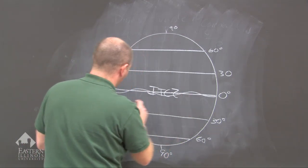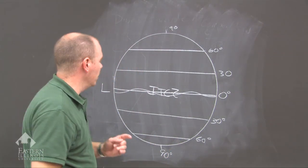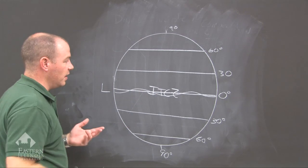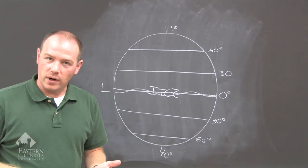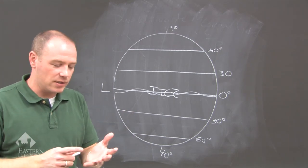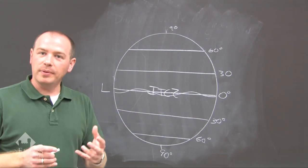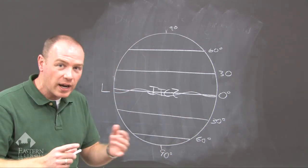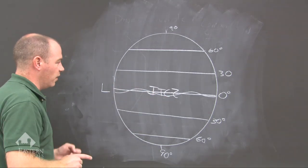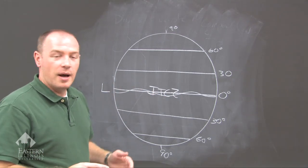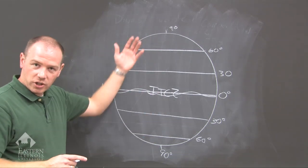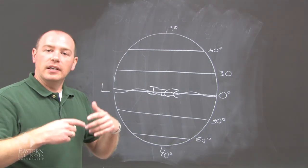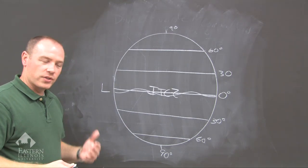The ITCZ is a low pressure zone, so you've got warm air rising. It influences the distribution of rainforests because it's constantly raining — it's a complex of thunderstorms and rain showers that goes around the entire world. Any time you see a rain forest on land, it is the result of the ITCZ. The ITCZ migrates with the Sun, as do all the other pressure belts.